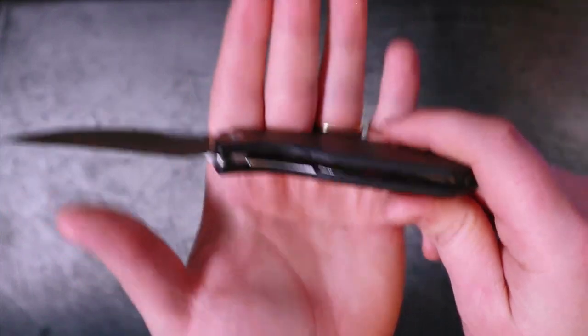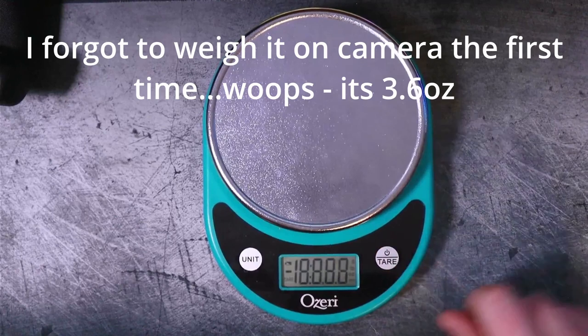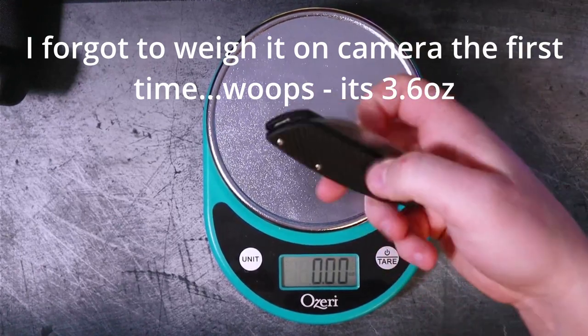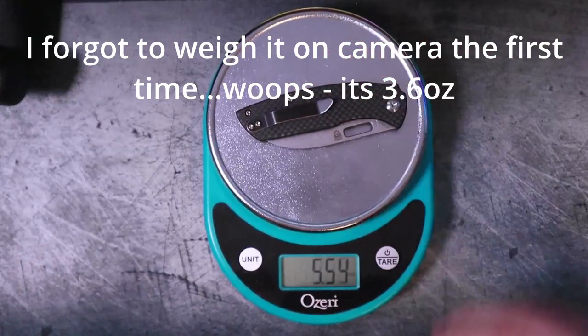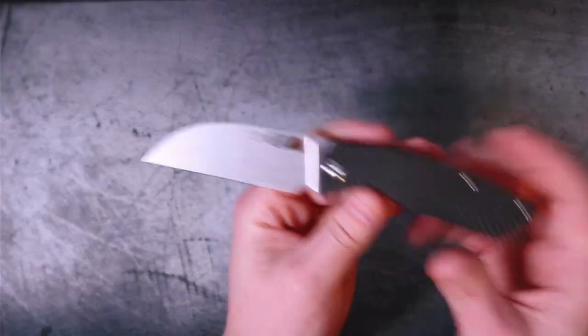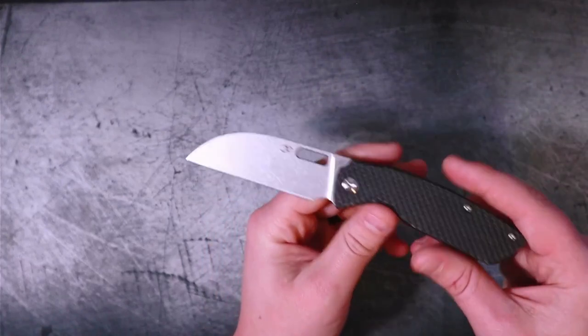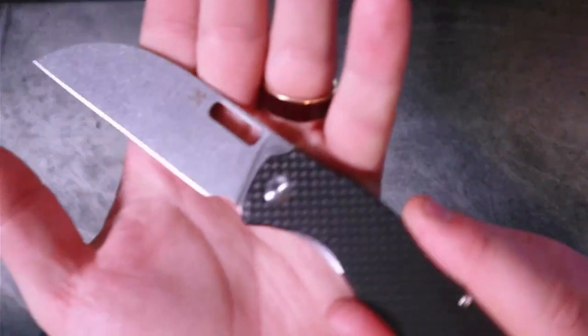It does have steel liners, it is in fact a liner lock, and as you can see those liners are in fact milled out for weight reduction. The blade is 154CM and it's stamped there on the blade itself. It's not too bad as far as billboarding goes, I'm not mad at it.